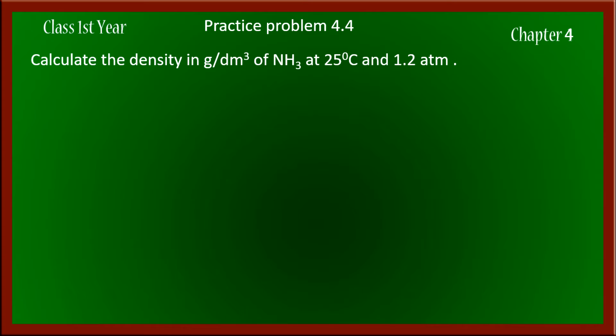Bismillahir Rahmanir Raheem. Today we are going to solve practice problem 4.4. The problem is very simple: calculate the density in gram per dm cube of ammonia gas at 25 degrees centigrade and 1.2 atm pressure.